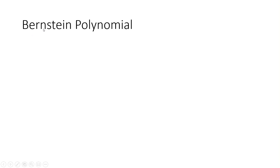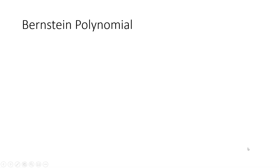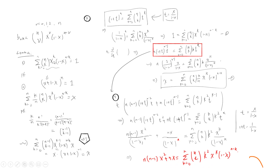Welcome, guys. In this video, let's talk about the Bernstein polynomial and how it will prove the Weierstrass approximation theorem. Let's quickly define the Bernstein polynomial b_{v,n}, where v can be zero up to n, defined as n-choose-v times x^v times (1-x)^(n-v).